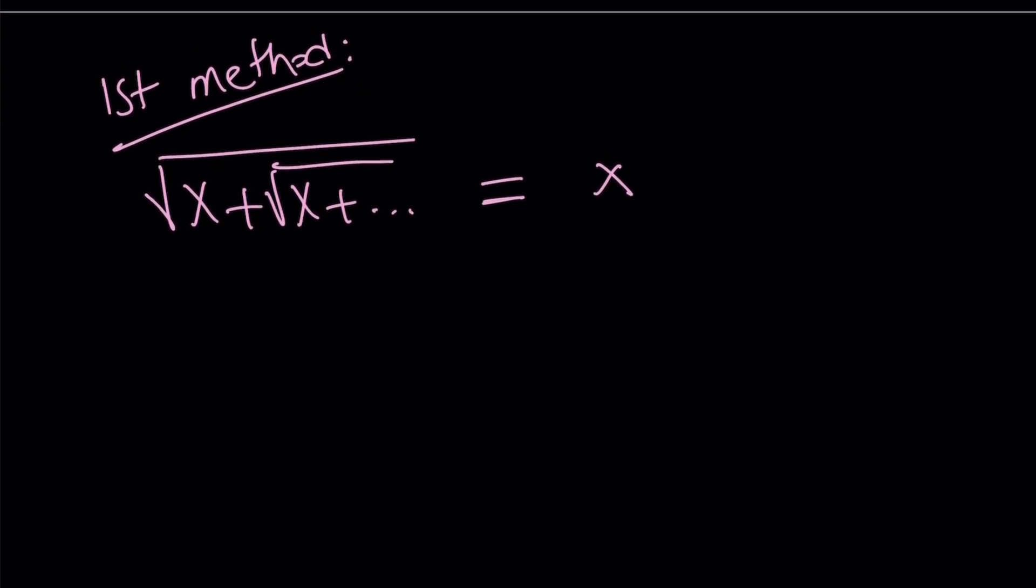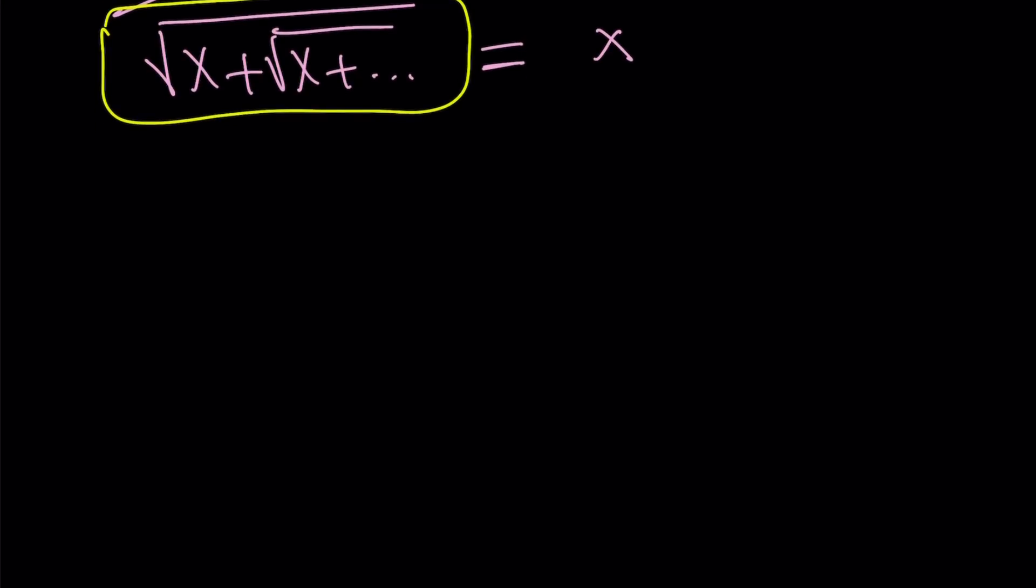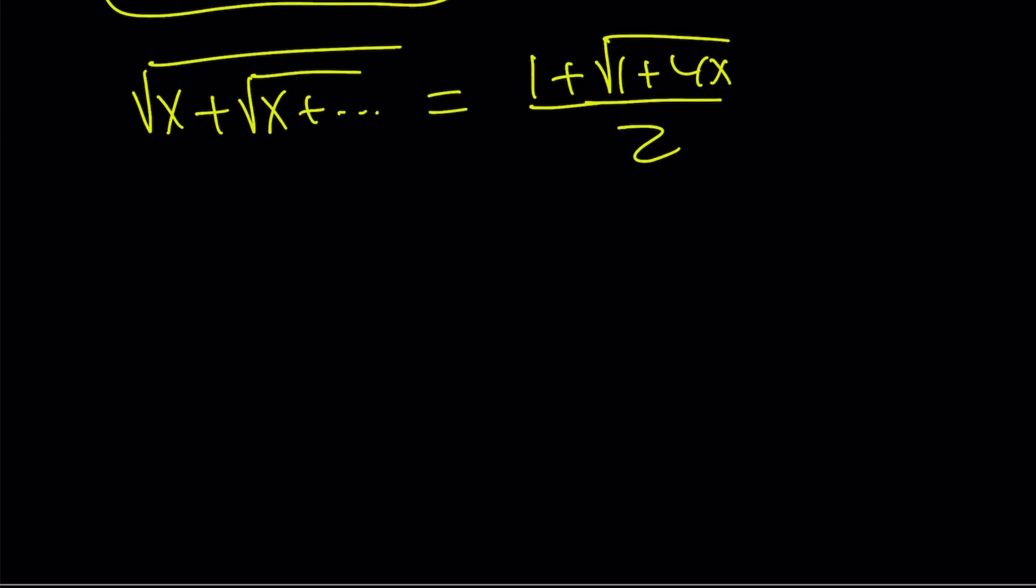And let me start with the first method. So our equation, again, is square root of x plus square root of x dot dot dot equals x. Now, when you have a number on the right-hand side, obviously, things are a little easier. But even with this, it's still easy. But first method is just going to be a little bit more painful. Bear with me. So ignore the right-hand side and just focus on the left-hand side. Don't we have a shortcut for this? Well, if you forget about that, there's a formula.